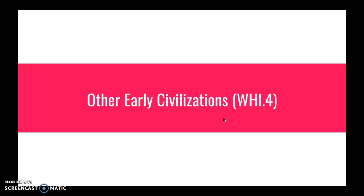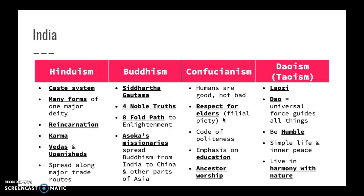The next category covers other early civilizations occurring along the same timeline. In India, the two main religions are Hinduism and Buddhism. In Hinduism, they have a caste system that sets up social structures. Hindus believe there are many forms of one God, with hundreds of different gods relating to specific cities and places. The main belief in Hinduism is reincarnation — the karma you have in this life helps you in the next because you may be reincarnated based on your karma. The holy books are the Vedas and the Upanishads, and Hinduism spread along major trade routes throughout Asia.